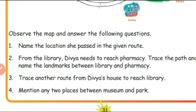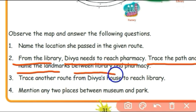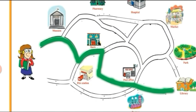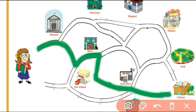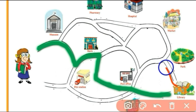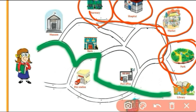Next, from the library, Divya needs to reach the pharmacy. Trace the path and name the landmarks between library and pharmacy. She can go through Park, Market, Hospital, and Pharmacy. The landmarks are: Park, Market, Hospital, Pharmacy.